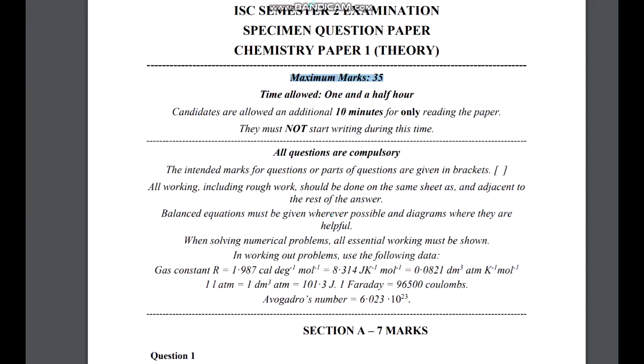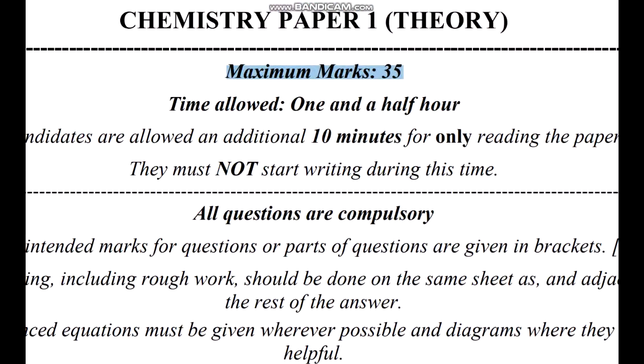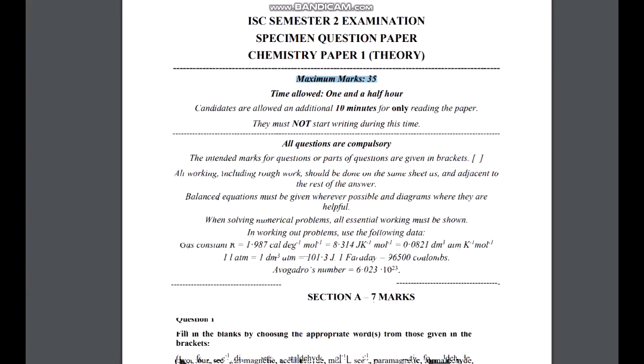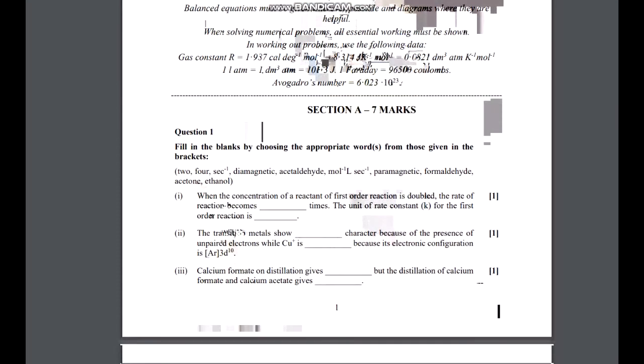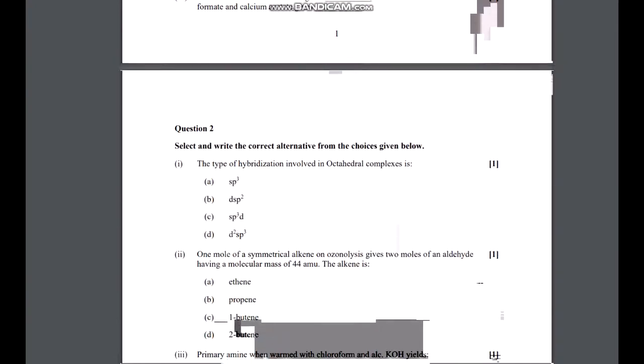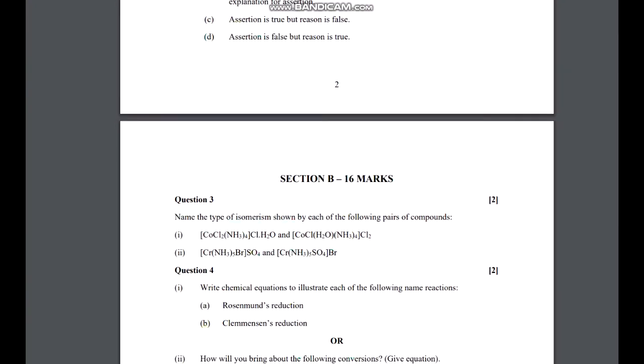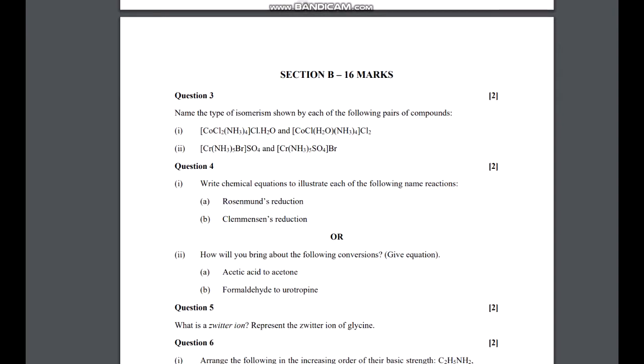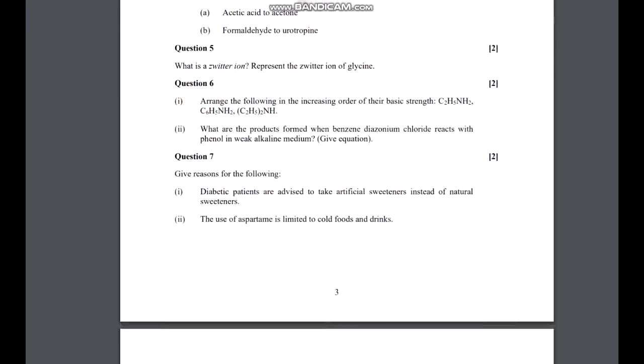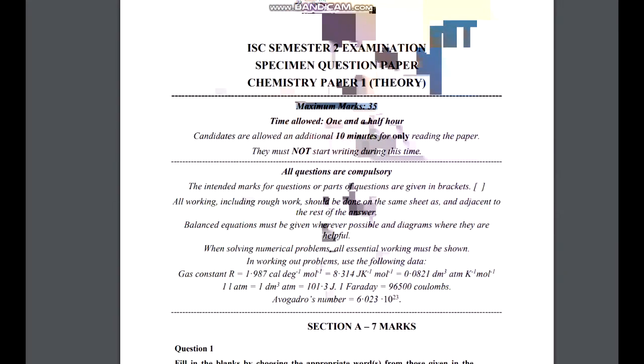Previously it was 70, now it is 35, so it's very confusing what is going to happen in Semester 2. As you can see, Section A has 7 marks with assertion type questions, and Section B contains 2 marks and 3 marks questions.